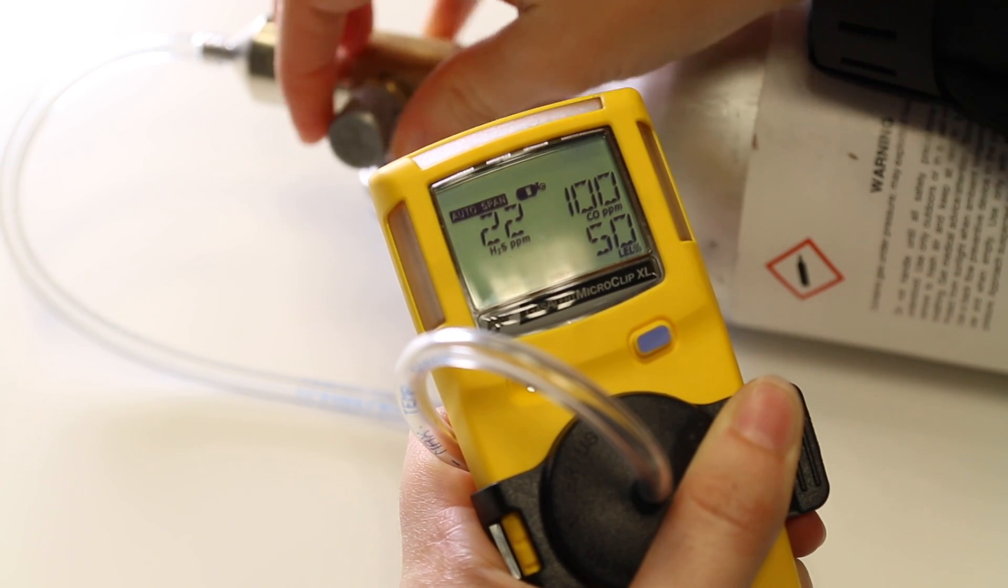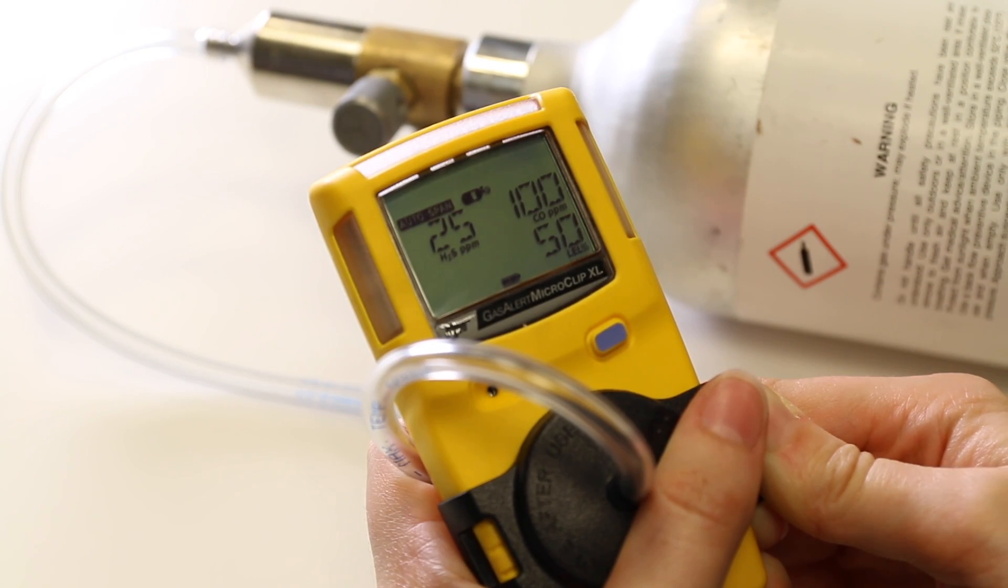After a sufficient amount of gas has been detected the unit will beep and the bottle symbol will appear. AutoSpan will flash until the MicroClip XL has completed the calibration.